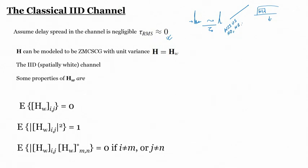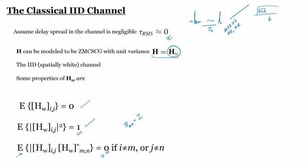We discussed the classical IID channel denoted HW, indicating it is spatially white. The HW channel has certain defining properties: the individual elements are zero-mean with unit power, and when we take the covariance, the R_HH matrix equals an identity matrix — the diagonal elements are 1 and the non-diagonal elements are 0. That is what defines the classical IID channel we will be using.